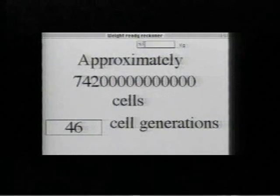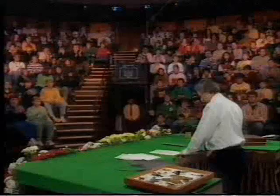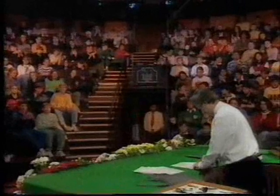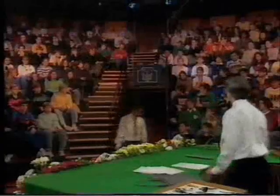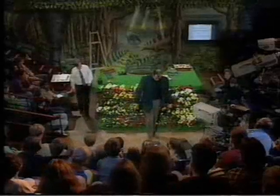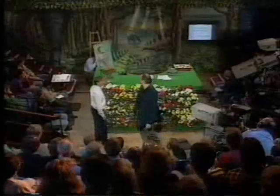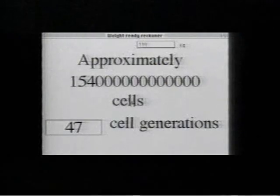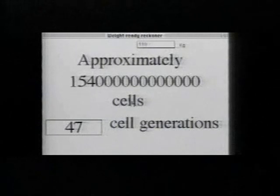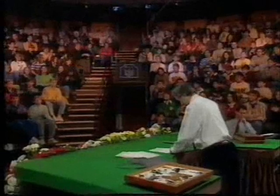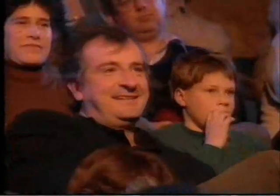It would only take about 46 cell generations to make Sam. Now let's try doing that with somebody a bit bigger. Douglas, would you like to come out? Quite a bit bigger — 110 kilograms. Right, 154 trillion cells. Only 47 cell generations, though. Thank you very much, Douglas.